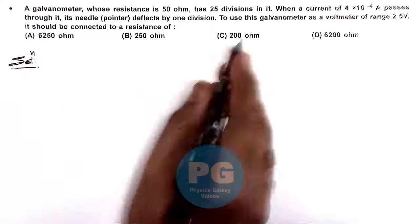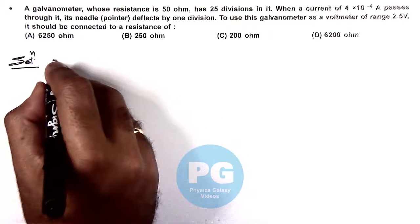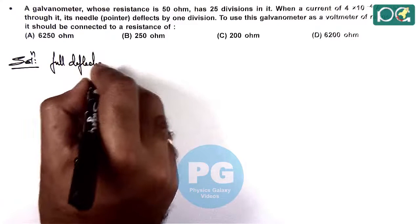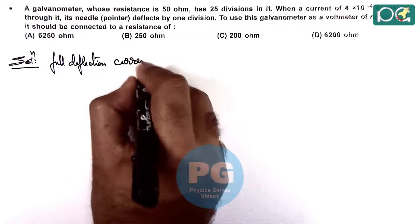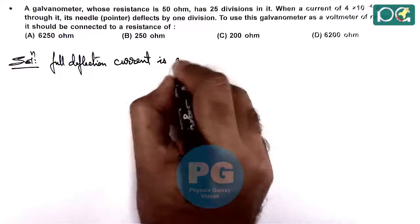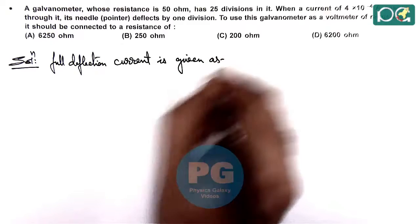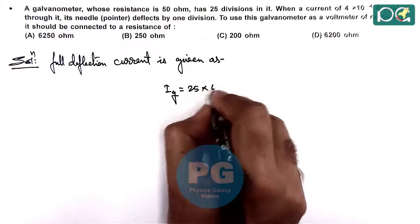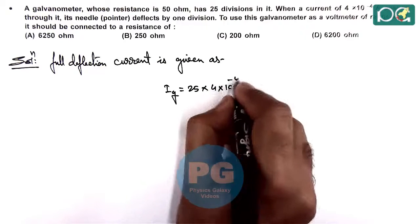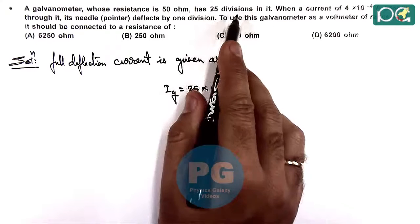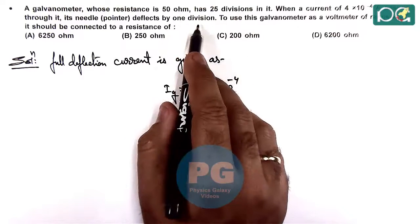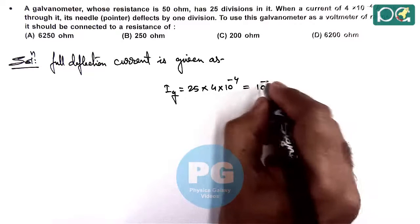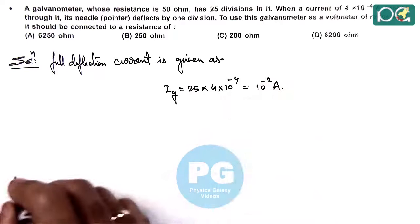First, from the given data, we can calculate the full deflection current of this galvanometer. The value of I_g is 25 multiplied by 4×10⁻⁴ because there are 25 divisions, and per division deflects at 4×10⁻⁴ ampere. This gives us 10⁻² ampere as the full deflection current.